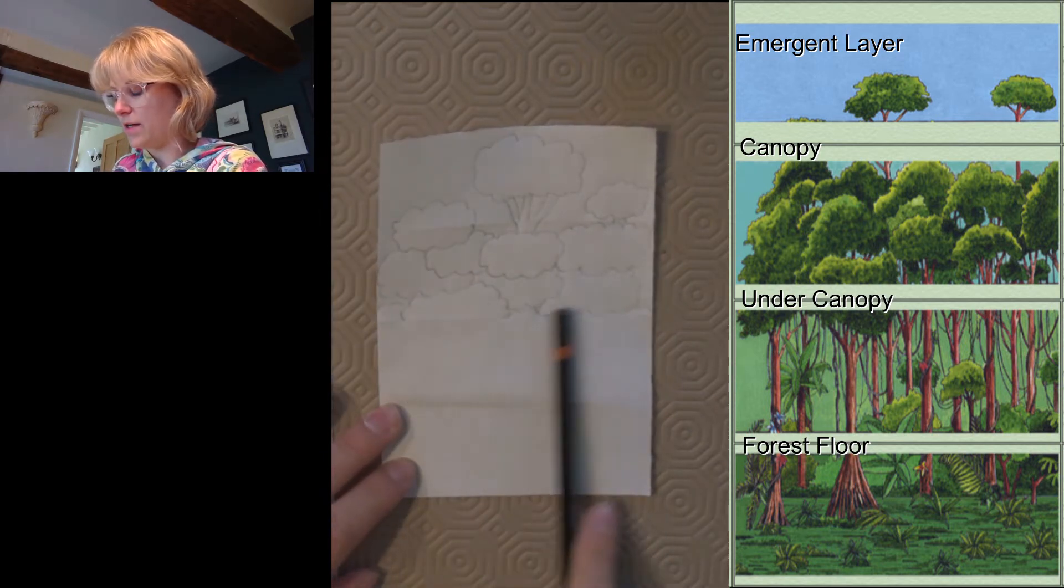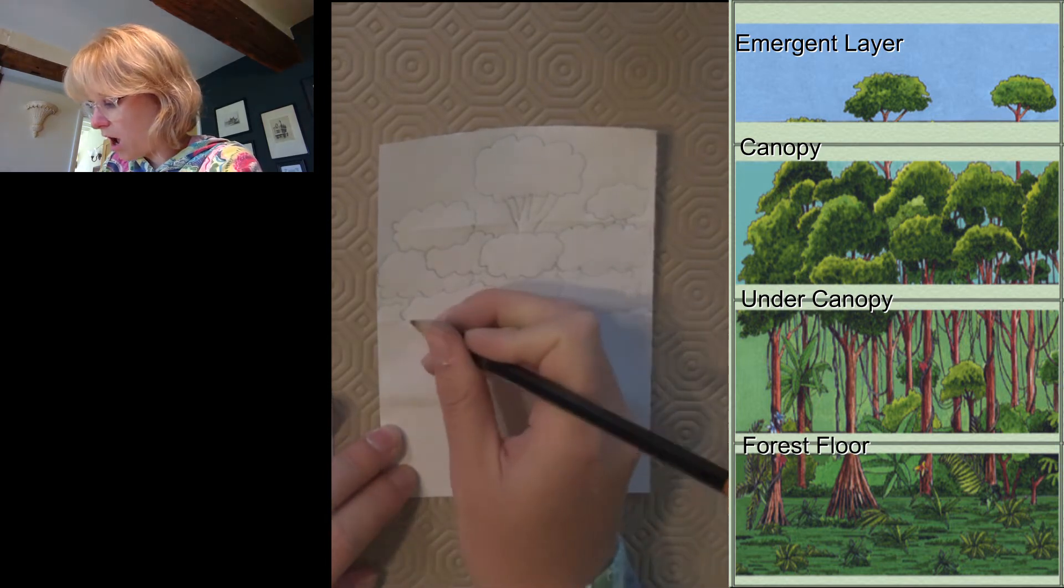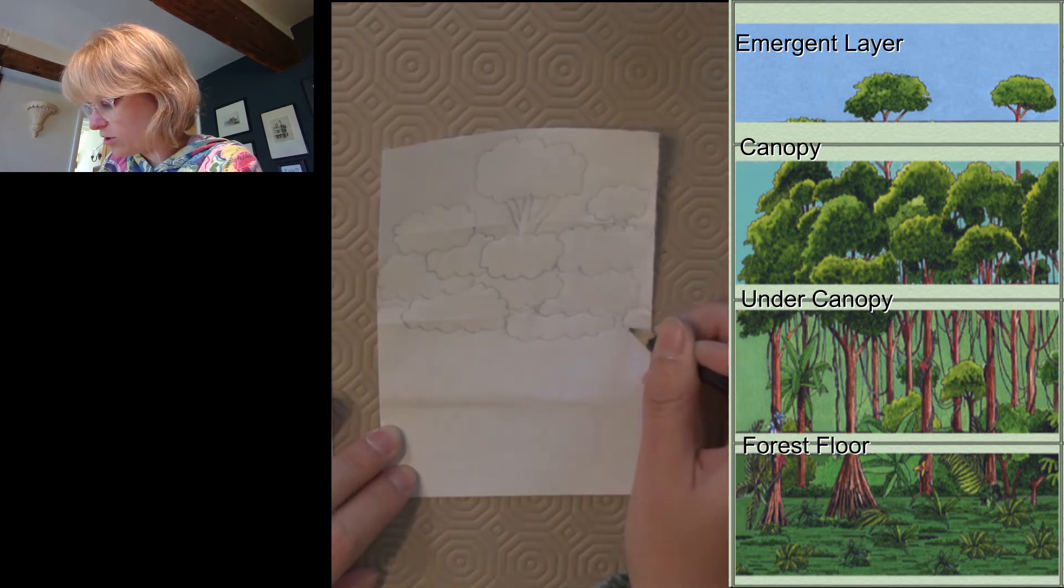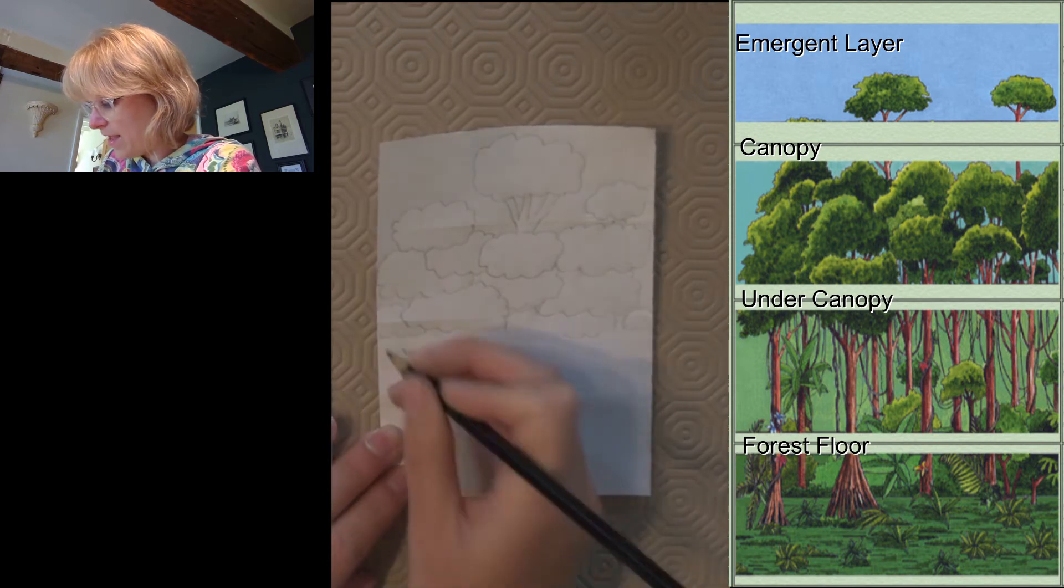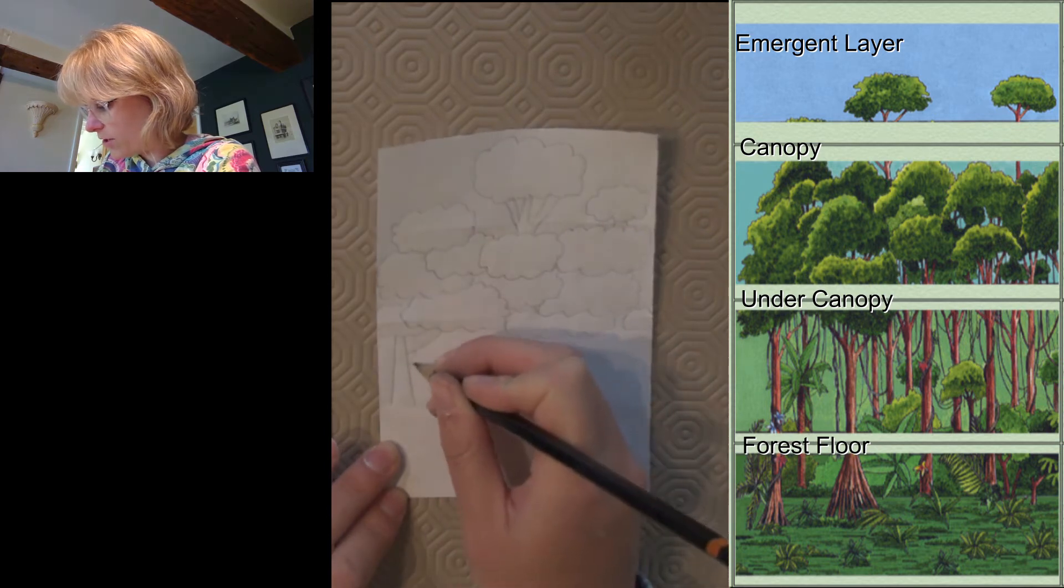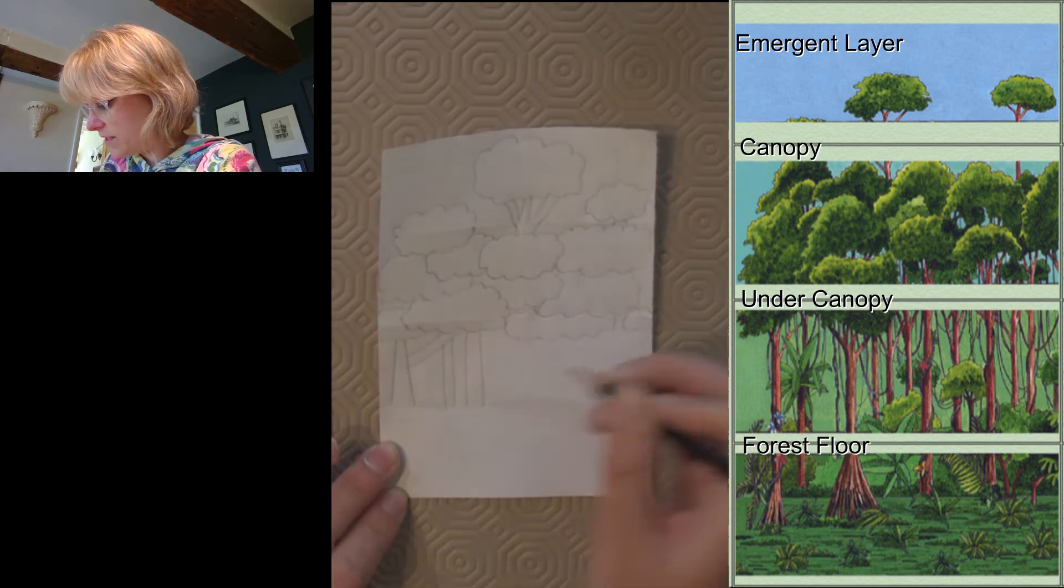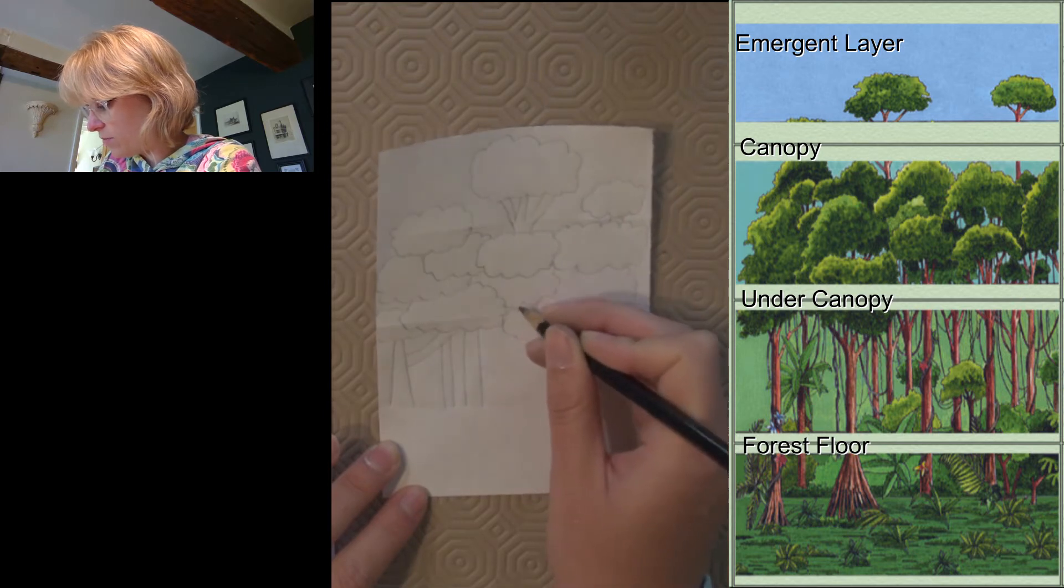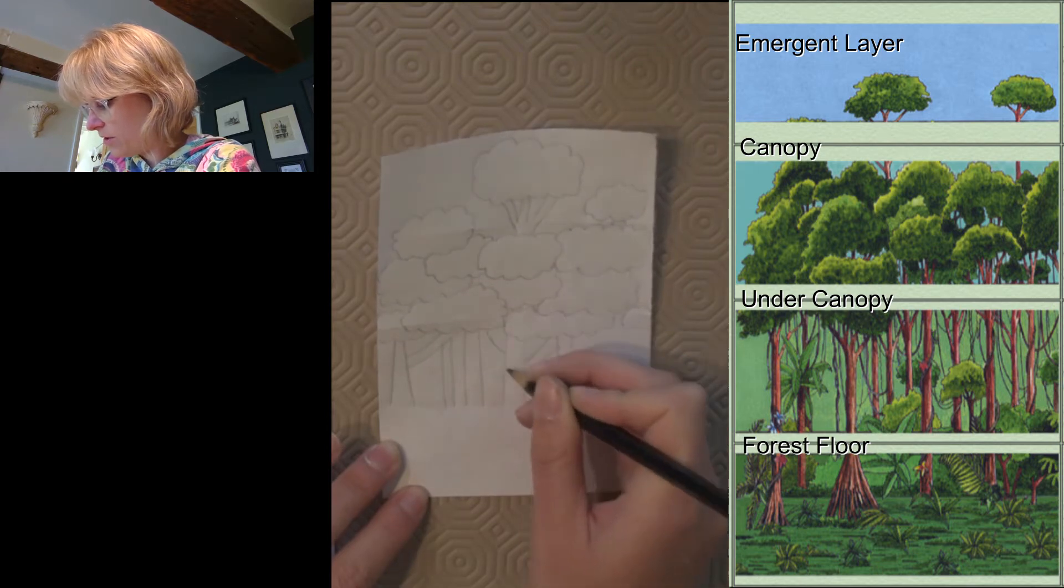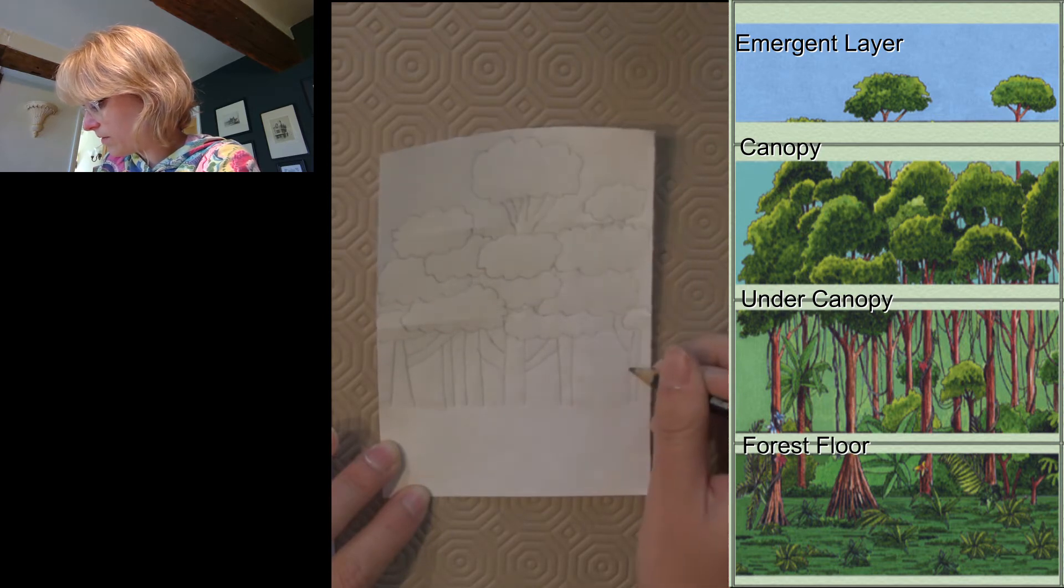Okay, so that's the canopy done, so we've got the emergent layer, canopy. Now this is the under canopy, so you will see underneath the leaves of these trees. I'm just going to finish off my trees that I started, and then you will get all of the trunks of the trees and maybe some branches.